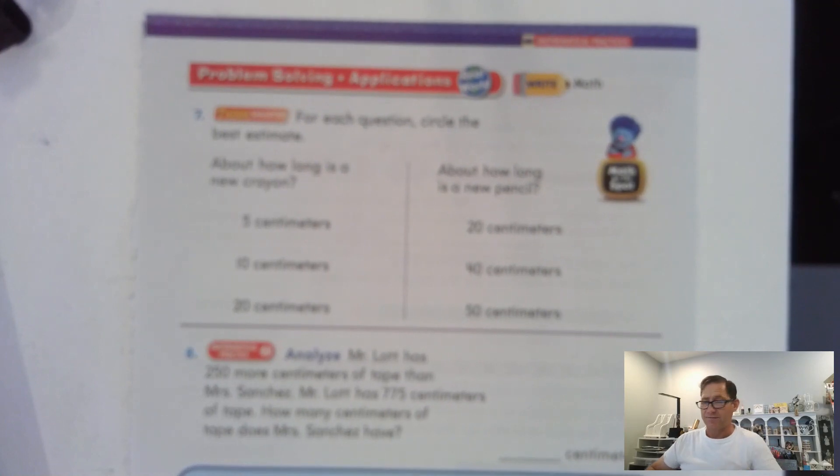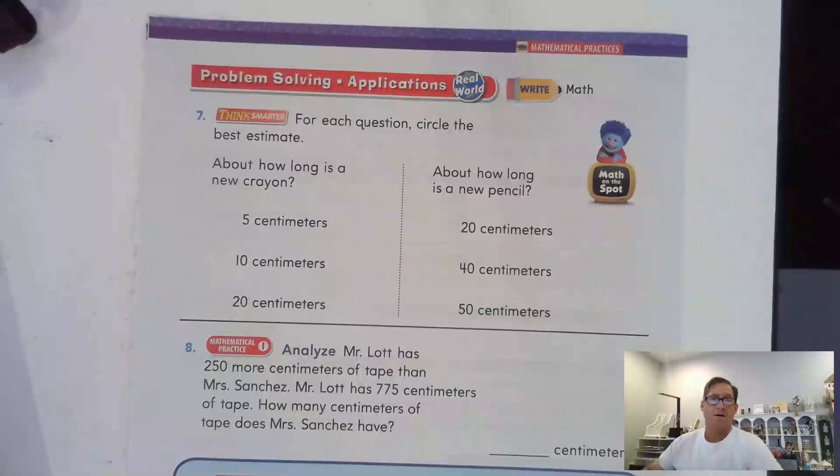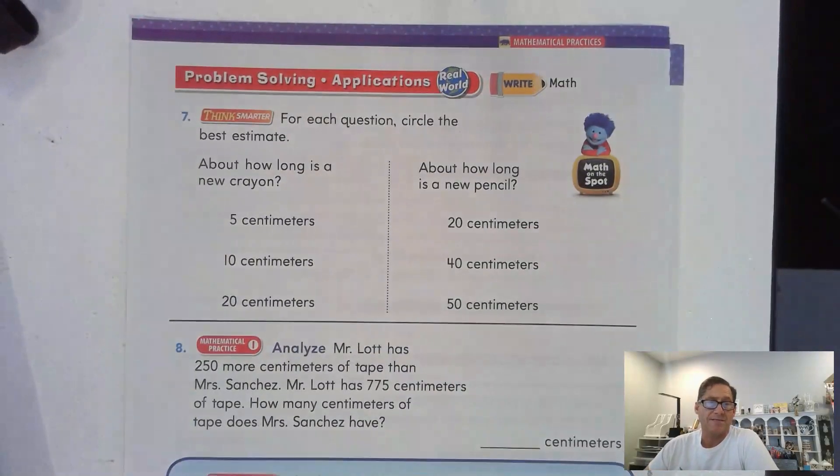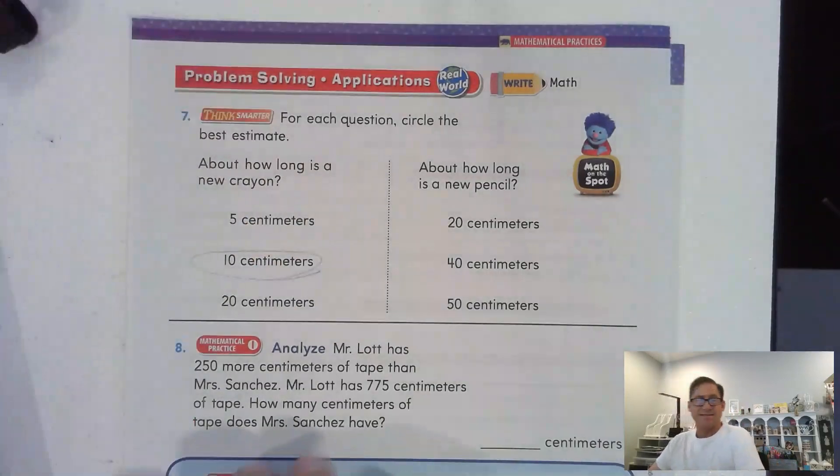Alright, number 7. And I apologize for the ringing on the phone. Alright, for each question, circle the best estimate. About how long is a new crayon? Okay, well a new crayon is about 10 centimeters.